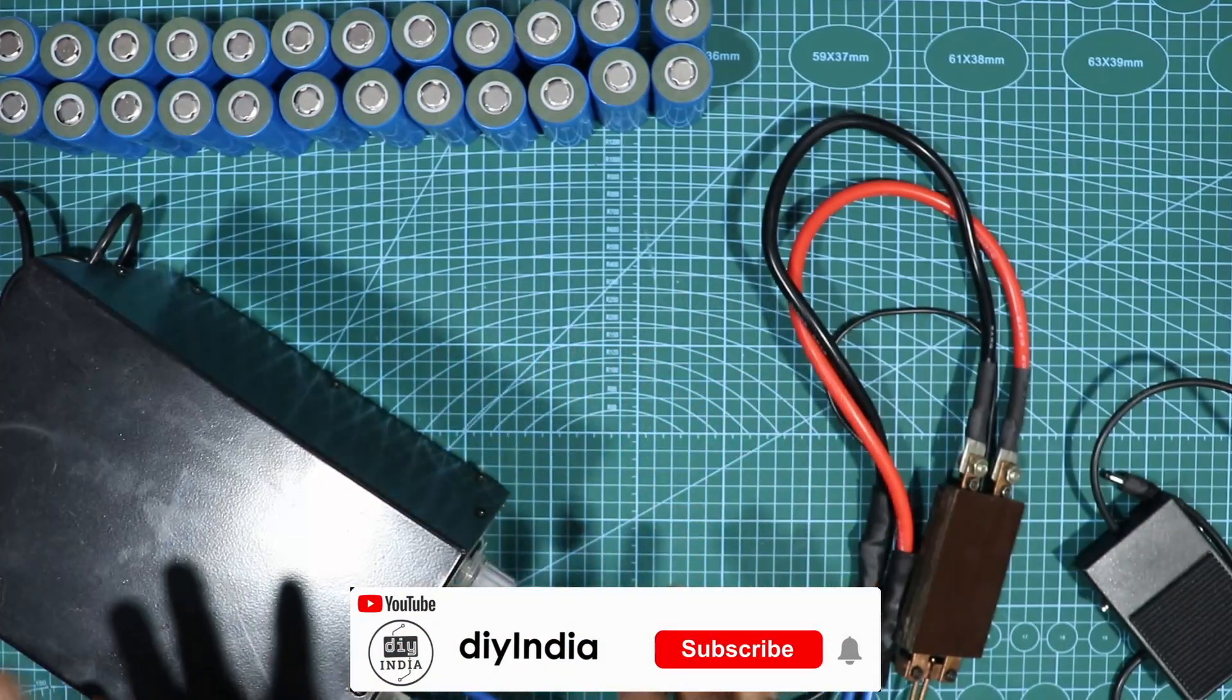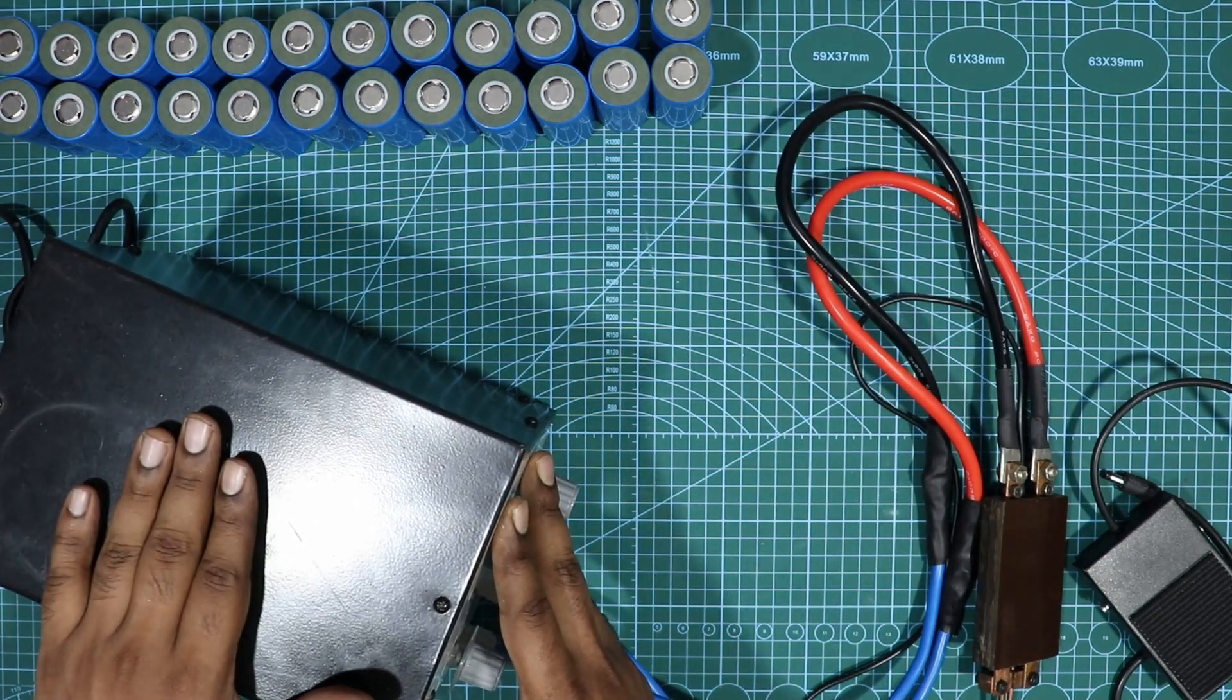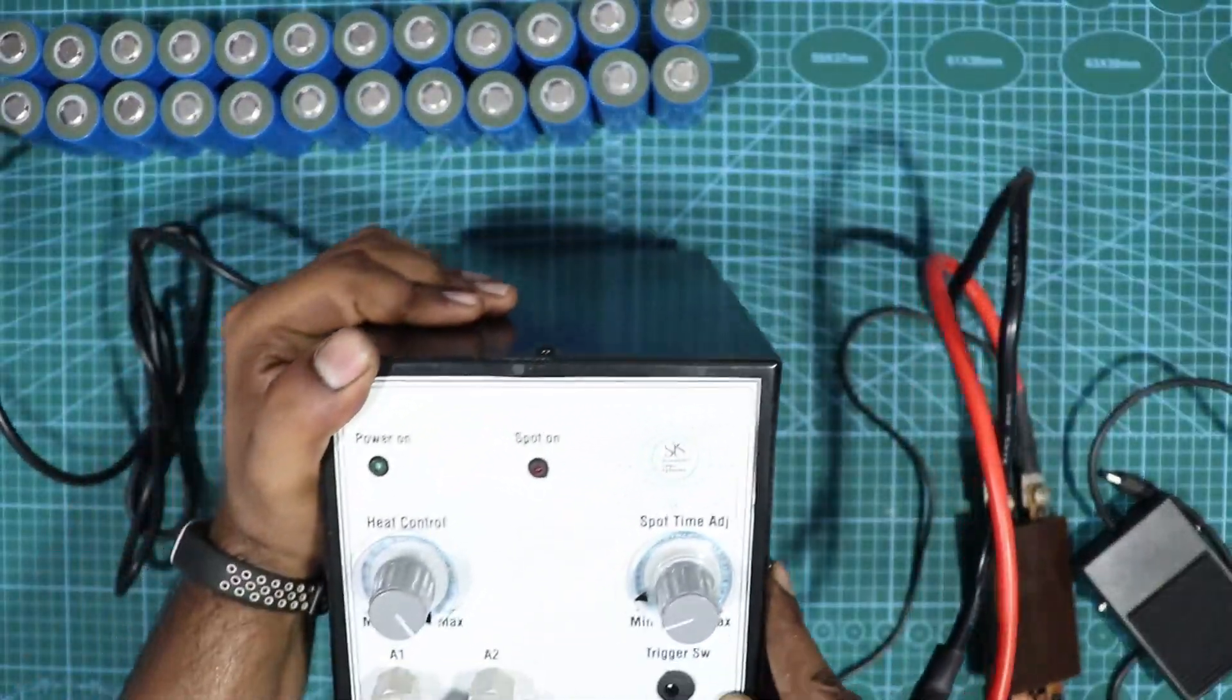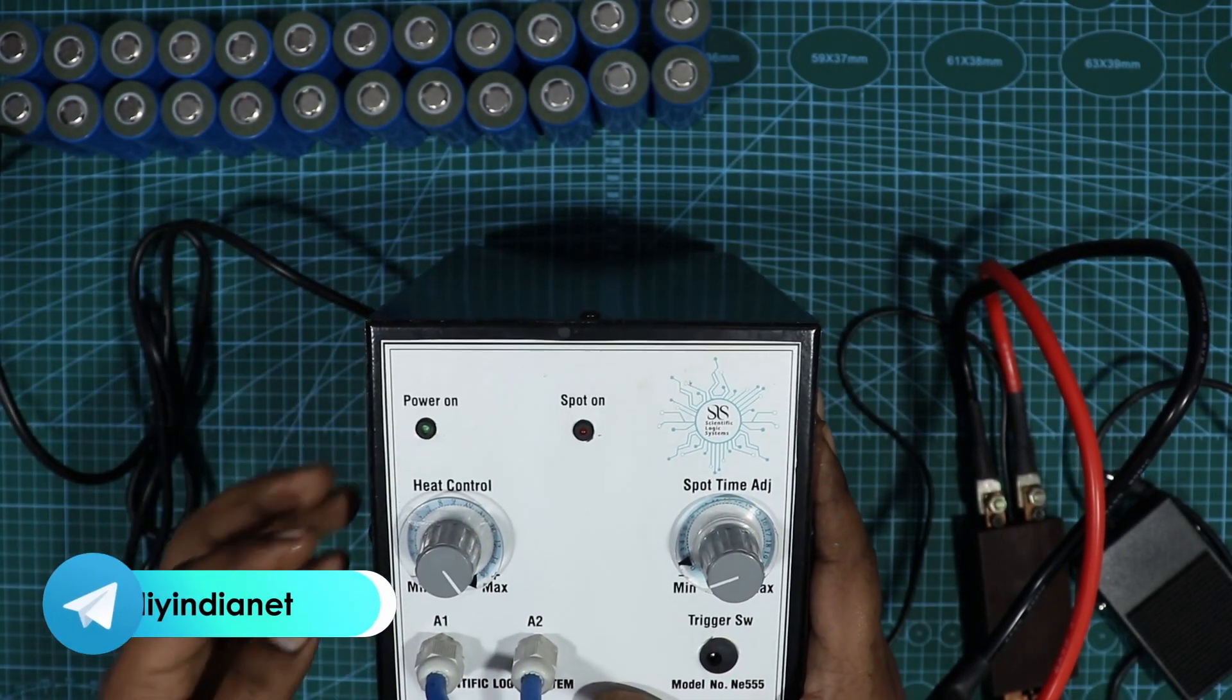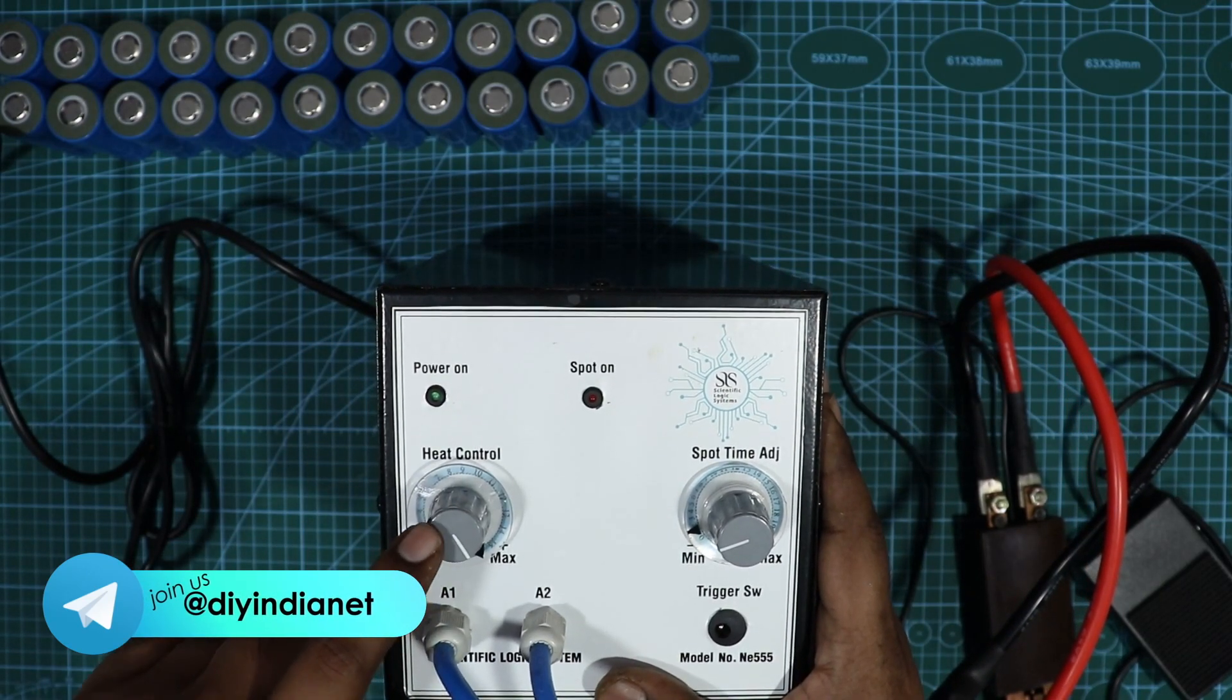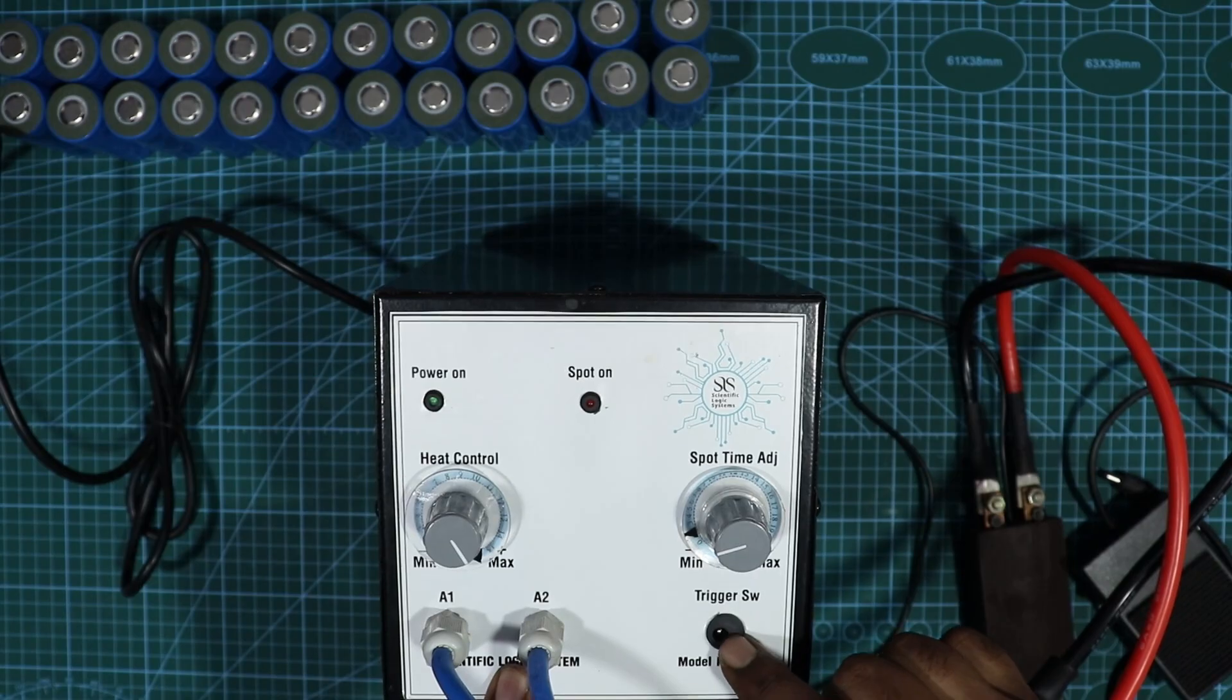But this one works on AC current and this is a professional grade spot welder. If you see the brand name is Scientific Logic and comes in proper packaging. You have two LEDs on the top and then you have an amp control to control your amps. It goes up to 100 amps on the two output wire and there's a trigger switch socket.